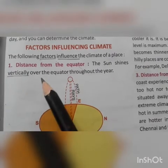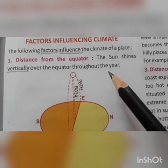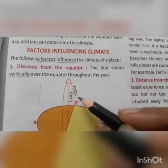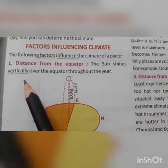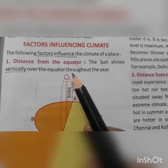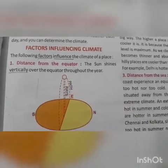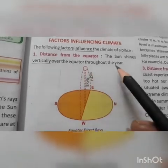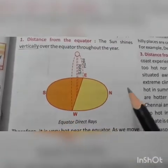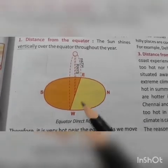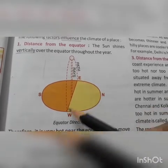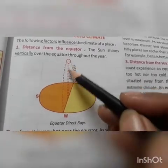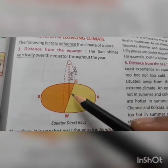The sun shines vertically — meaning directly — over the equator throughout the year, meaning for the whole year. So the rays of the sun fall directly on the equator. You can see in the picture the equator receiving direct rays. This is the equator and there are rays of the sun falling directly, or vertically, over the equator.